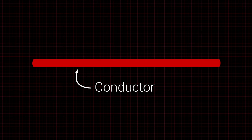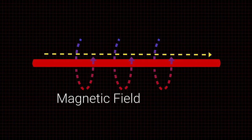To understand how this works, let's break it down a bit. As current flows through a conductor, a magnetic field is created around it.